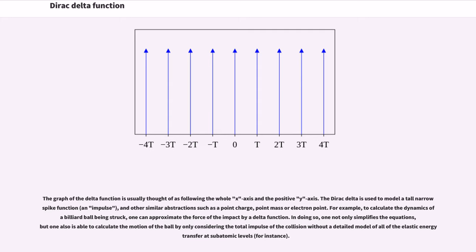For example, to calculate the dynamics of a billiard ball being struck, one can approximate the force of the impact by a delta function. In doing so, one not only simplifies the equations, but is also able to calculate the motion of the ball by only considering the total impulse of the collision, without a detailed model of all of the elastic energy transfer at subatomic levels.